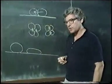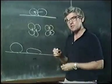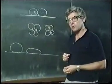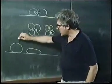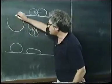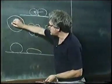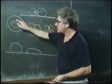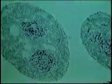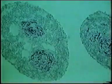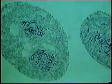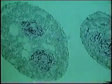This was done with aggregates whose sorting out and spreading behavior was already known. And it turned out that in every single case, the aggregate that would take up the internal position when sorting out or spreading was completed was the aggregate which was rounder at the end of a period of centrifugation — showing that it is the more cohesive aggregate that goes to the inside, takes up the internal position.